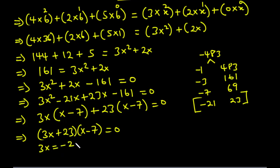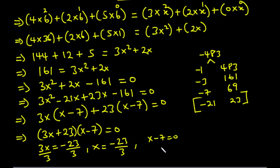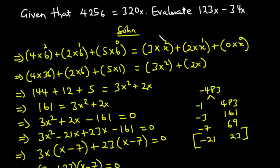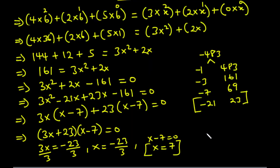From (3x plus 23)(x minus 7) equals 0: either 3x plus 23 equals 0, giving x equals negative 23 over 3, or x minus 7 equals 0, giving x equals 7. Since x cannot be a negative value, we take x equals 7. Therefore, 425 base 6 is equal to 320 base 7.